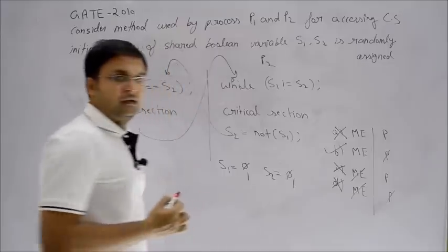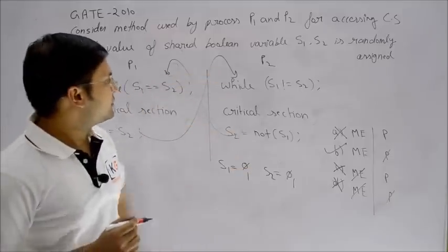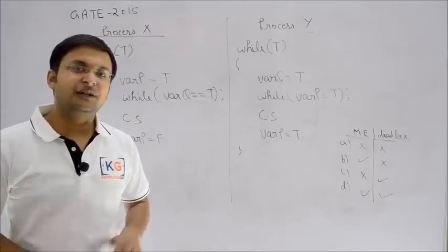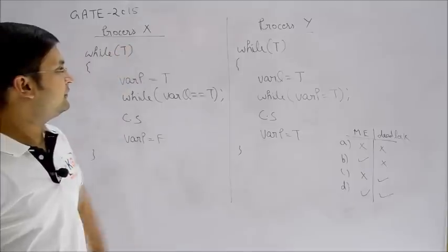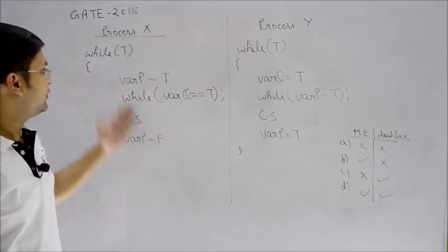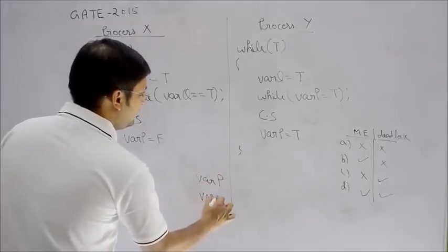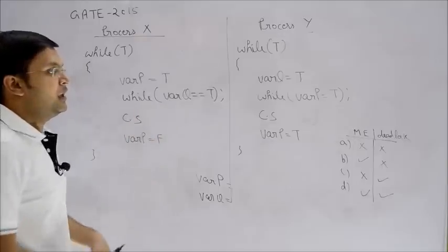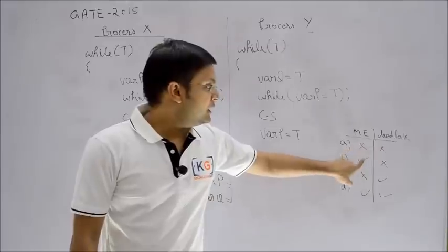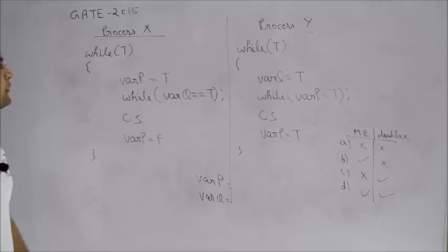These are simple one-mark questions. There will be two segments of code and you are asked to identify the logic. Now let's try one more problem — it was asked in GATE 2015. There are two pieces of code X and Y, with two boolean variables P and Q, and two processes X and Y. The options ask whether mutual exclusion is ensured, whether there is deadlock, and so on. Let's check — first I'll verify mutual exclusion with both variables initialized to false.